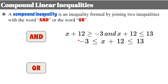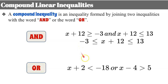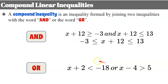When you have an OR compound inequality, it will look like this. There's no way to write it a second way — it has to be two inequalities joined by the word OR. So I have a standalone inequality or this inequality.